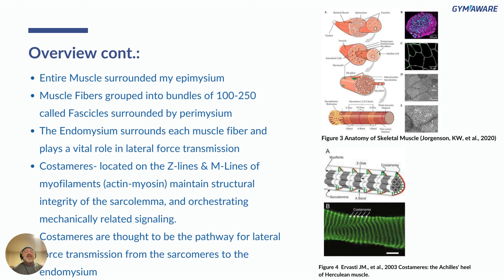The entire muscle is surrounded by the epimysium, and eventually the epimysium, perimysium, and endomysium all end at the tendon — they're just surrounding collagen layers. Muscle fibers are grouped into bundles of 100 to 200 fibers called fascicles, surrounded by the perimysium. The endomysium surrounds each individual muscle fiber and plays a vital role in lateral force transmission, probably through the costameres.